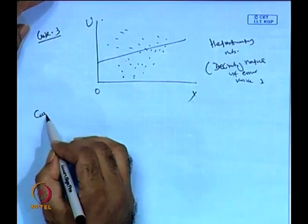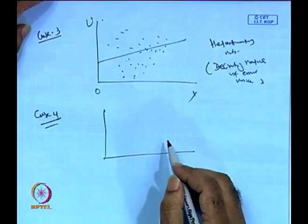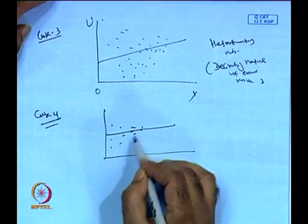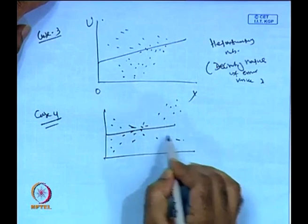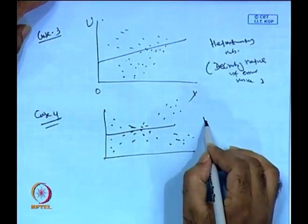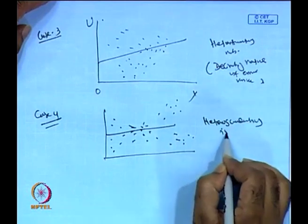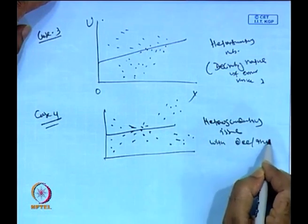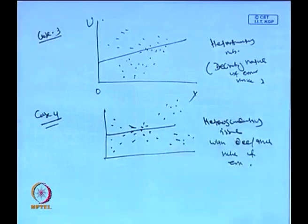In Case 4, there may be a mixed pattern — the error variance first decreases and then increases, or varies erratically. This is also a heteroscedasticity issue, with both decreasing and increasing nature of error variance simultaneously. Altogether, there are four different shapes of heteroscedasticity problems.